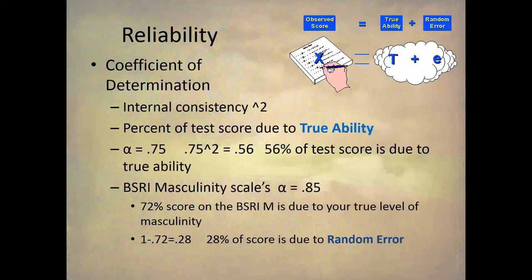Getting back to why 0.71 is the bare minimum: because 0.71 times 0.71 equals 0.50, which means half the test score is error. We'll talk about error and why that's bad in future lectures about statistical conclusion validity. All right, bye-bye.